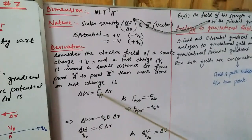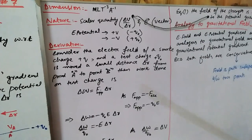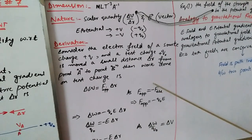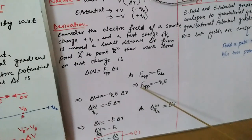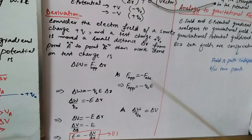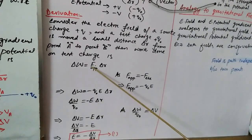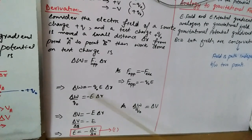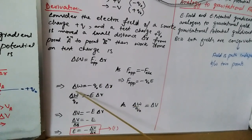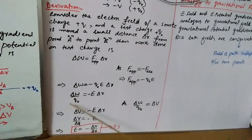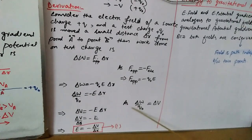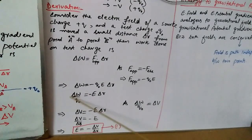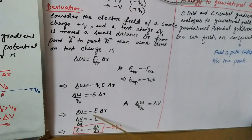Since this is a dot product, and F_applied is equal in magnitude but opposite in direction to the electrostatic force, we have F_applied = −Q₀E, because electrostatic force equals Q₀E. So: ΔW = −Q₀E · Δr. Moving Q₀ to the other side of the equation gives ΔW/Q₀ = −E · Δr. From our previous topics, ΔW/Q₀ = ΔV, so ΔV = −E · Δr.